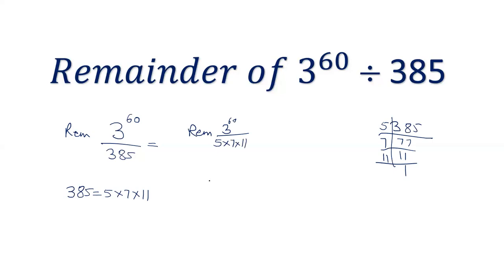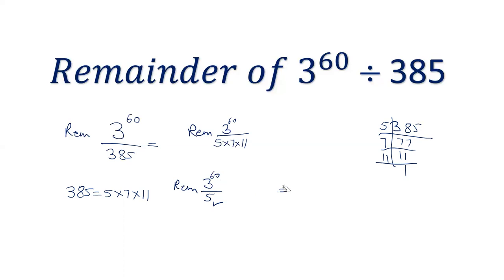Let's check what is the remainder when 3 power 60 is divided by 5. As per Fermat's Little Theorem, if p is a prime number, then a power (p minus 1) divided by p will give the remainder as 1. Since 5 is prime, 3 power 4 divided by 5 will give the remainder as 1.